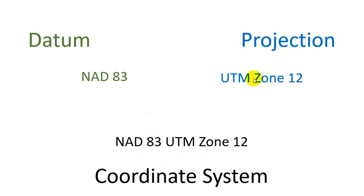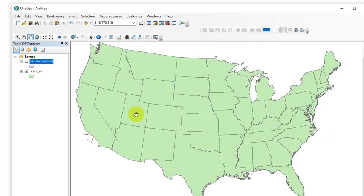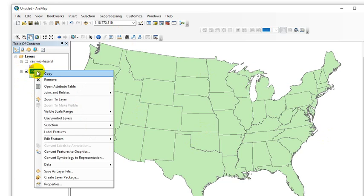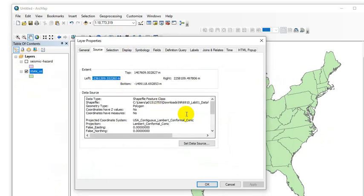Let's take a look at actual data in ARC really quick. Here's a map of the contiguous United States. Here's another one. They're sitting directly on top of each other, so they're mapped in the same place. If I look at the coordinate system for the state outlines, it says it's got a projected coordinate system. USA, contiguous Lambert Conformal Conic. That's the coordinate system. It tells you it's projected. It tells you the projection itself is Lambert Conformal Conic.